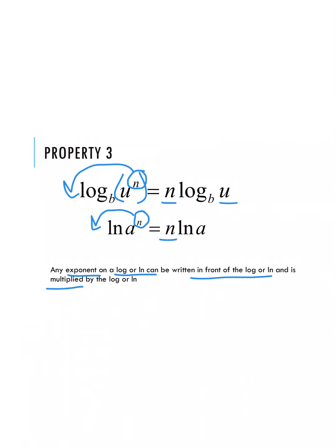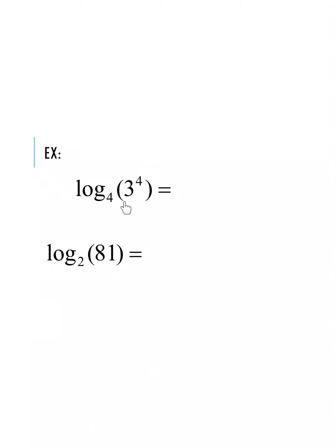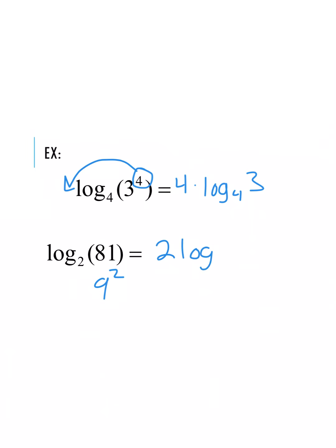For our first example, we have log base 4 of 3 to the 4th. The 4 is our exponent, so I rewrite the expression by taking that 4 and moving it to the front: 4 times log base 4 of 3. For our second expression with 81, I rewrite it as 9 squared, and that 2 moves to the front: 2 times log base 2 of 9. There are other ways we could simplify that.